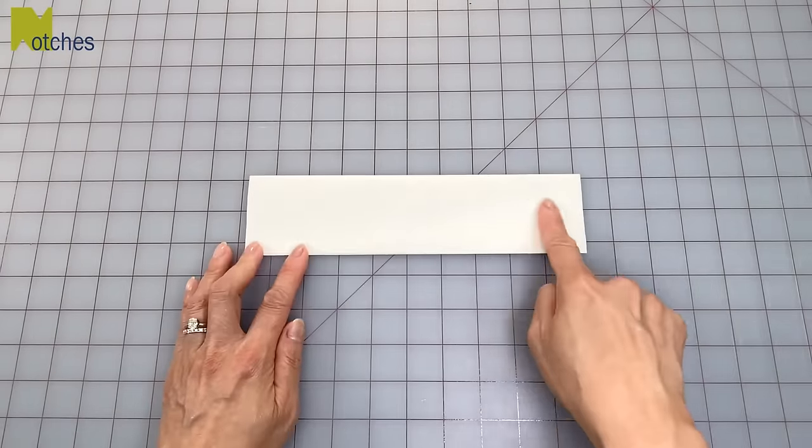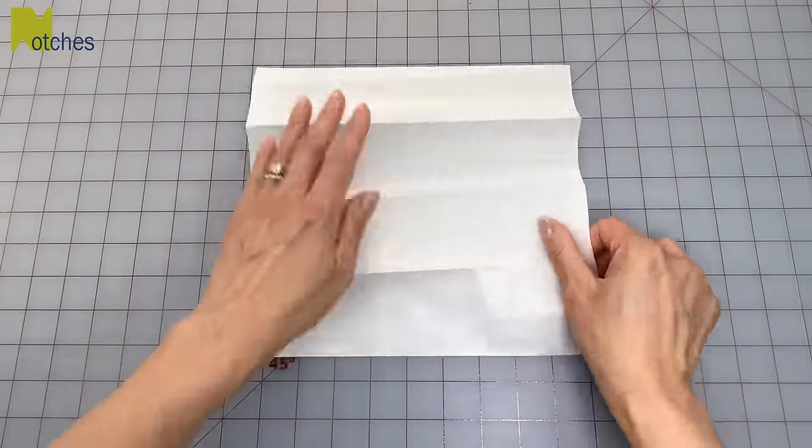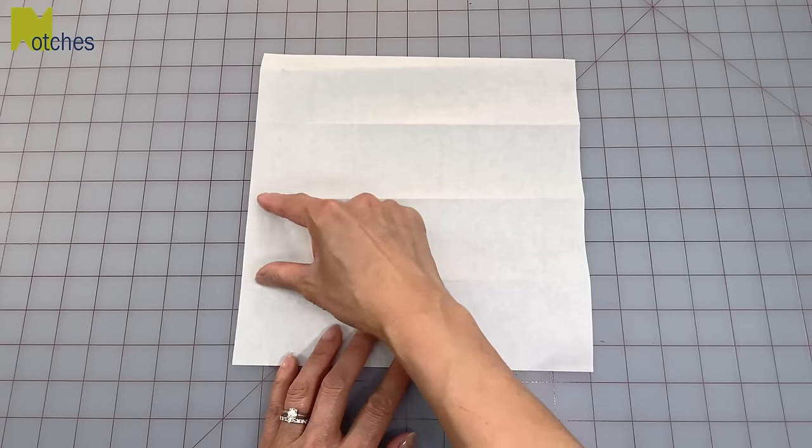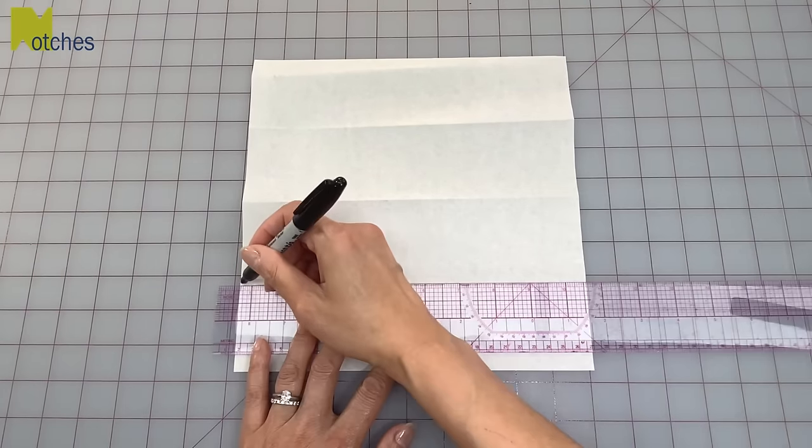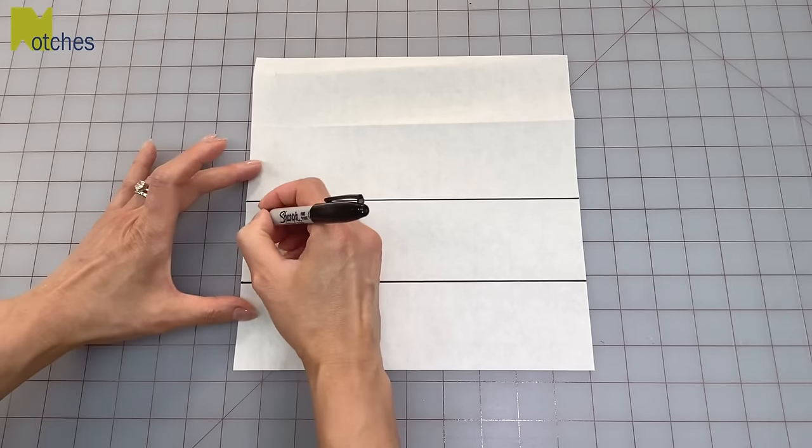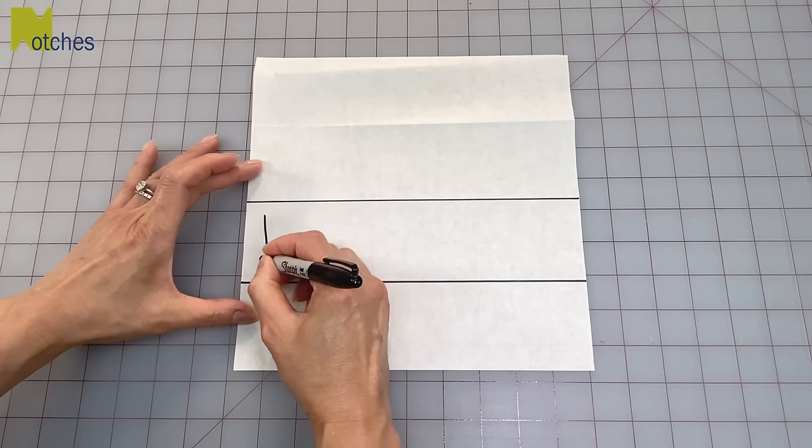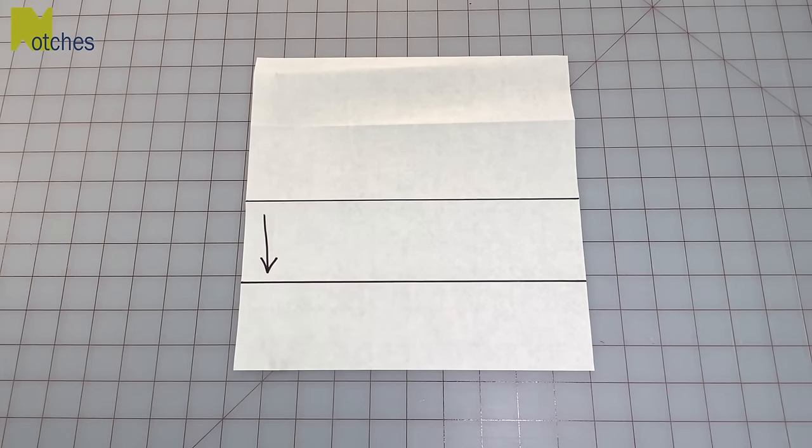This will be the front of the strap. Open it up and on your pattern, this is the section that's the front. Mark out that section and then draw an arrow along the edge pointing downwards. This will help guide you when cutting directional fabric.